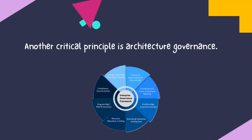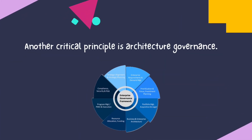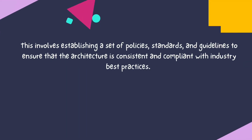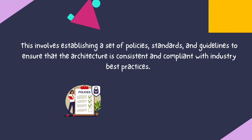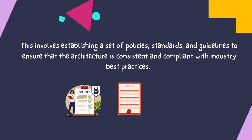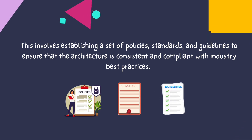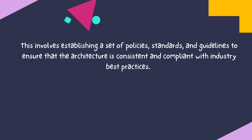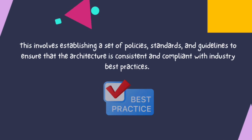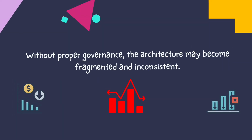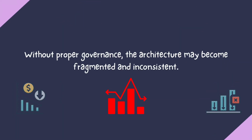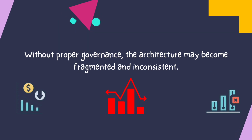Another critical principle is Architecture Governance. This involves establishing a set of policies, standards, and guidelines to ensure that the architecture is consistent and compliant with industry best practices. Without proper governance, the architecture may become fragmented and inconsistent.